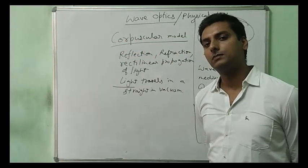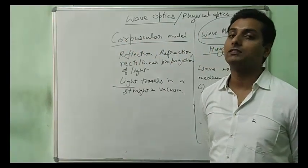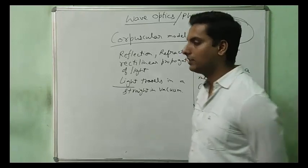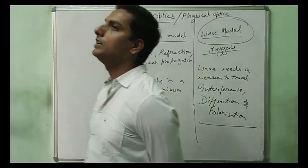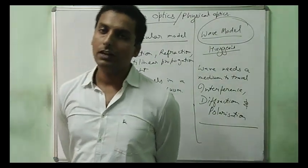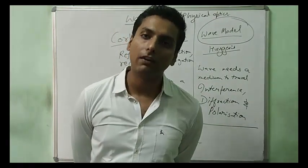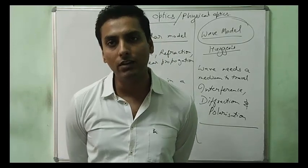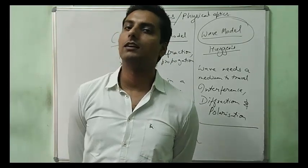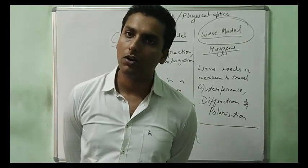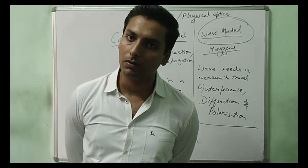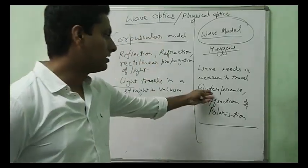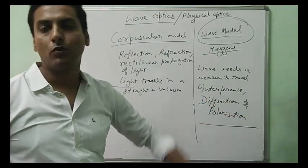So light exhibits particle nature, and when it does, it is called ray optics. When light is considered to have wave nature, it is called wave optics. The branch of physics that deals with the wave nature of light is called wave optics or physical optics, which is dependent on the phenomena of interference, diffraction, and polarization.